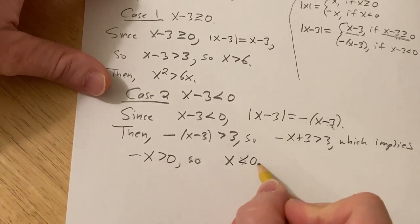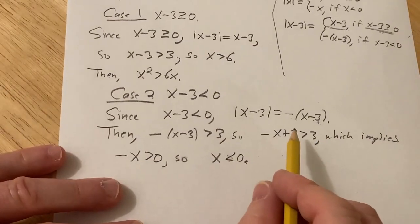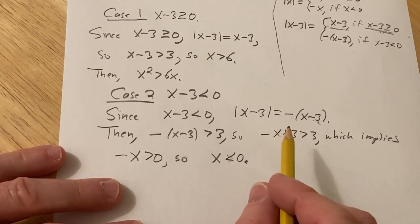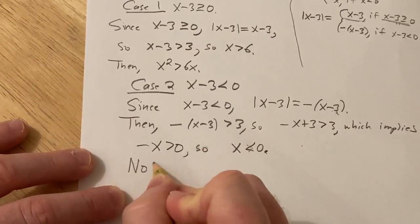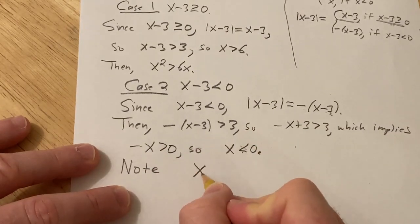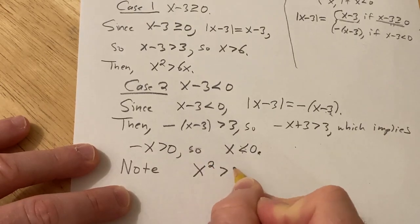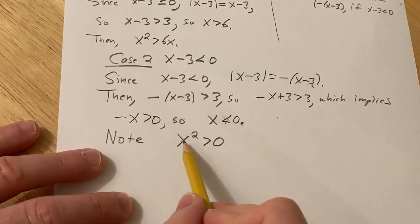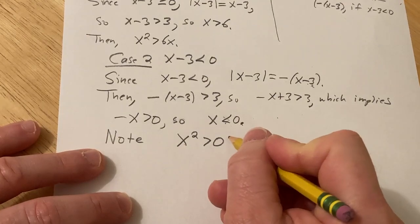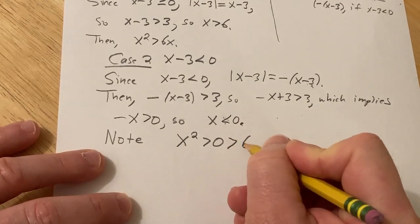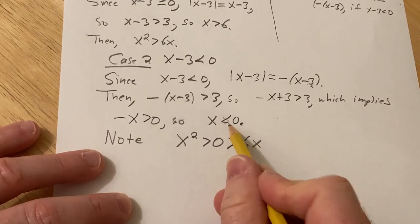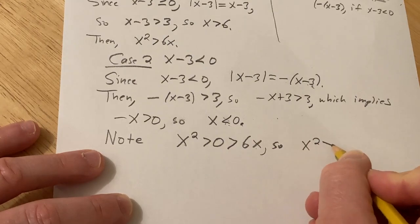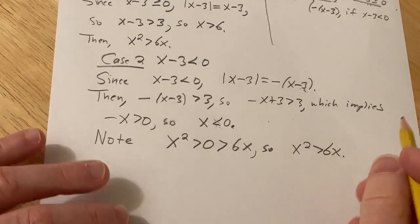So let's think about what we have to show. We have to show that x squared is bigger than 6x. We have to show that. So note, x squared is positive, because x is not 0, it's less than 0, so it's a negative number. And when you square a negative number, it becomes positive. And 0 is actually bigger than 6x. And that's because x is negative. So in particular, we have x squared bigger than 6x. And we've shown it, and so in any case, we're done.